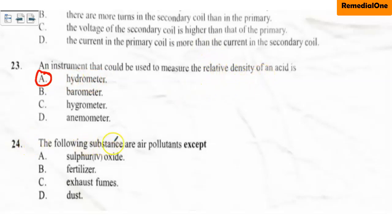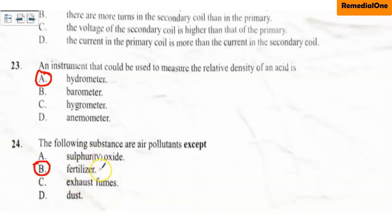Question twenty-four: the following substances are air pollutants except A. sulfur dioxide, B. fertilizer, C. exhaust fumes, D. dust. All of these are pollutants except option B — fertilizer. Fertilizer is used to enrich the soil and does not cause air pollution. Sulfur dioxide, exhaust fumes, and dust all cause air pollution. So fertilizer is the exception.